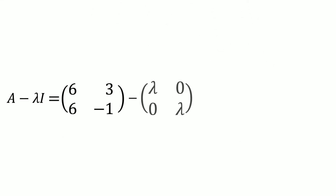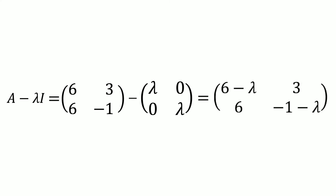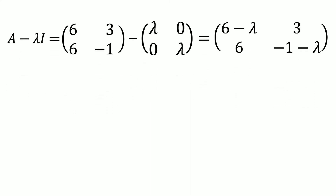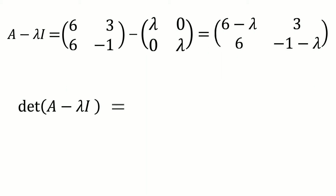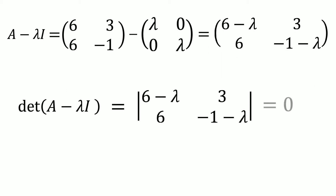The next step is to find A minus lambda I. This gives us the matrix with entries 6 minus lambda, 3, 6, and minus 1 minus lambda. Now we have to find the determinant of the matrix A minus lambda I, and this determinant has to equal 0.